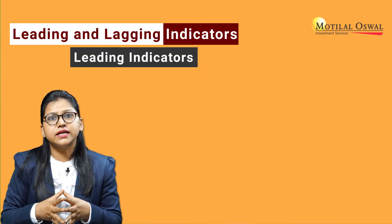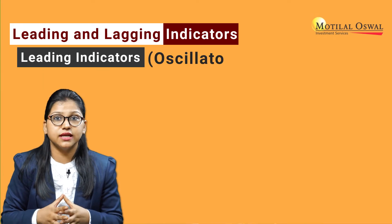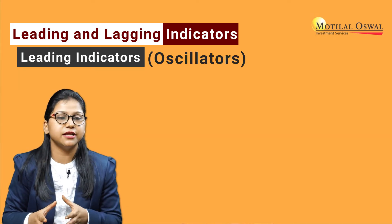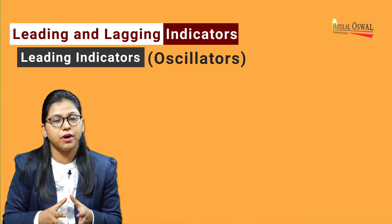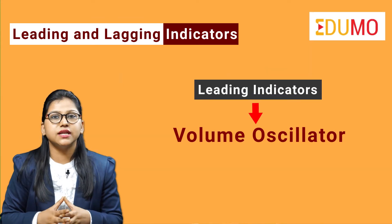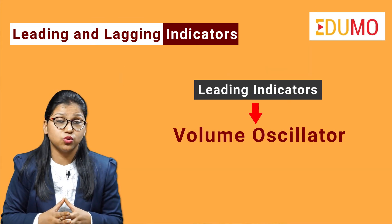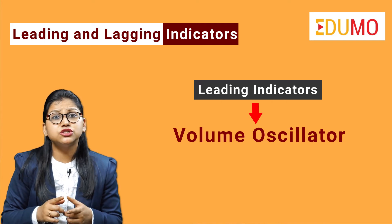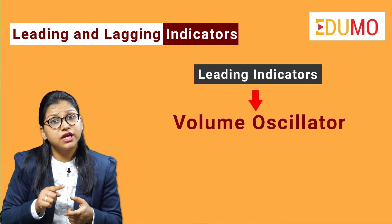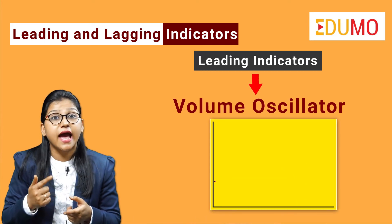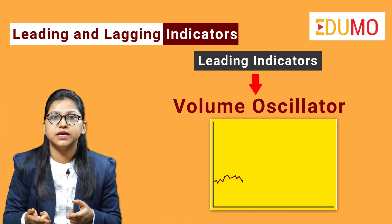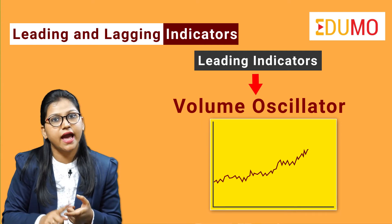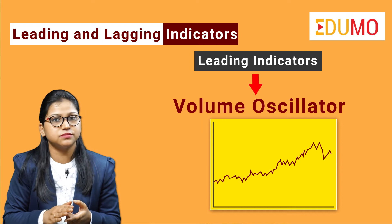Leading indicators are also known as oscillators as they indicate the buying and selling pressure in the market. The volume oscillator is also among the most popular leading indicators as it shows changes before price movements actually take place, being an indication of buying and selling pressure in the stocks.